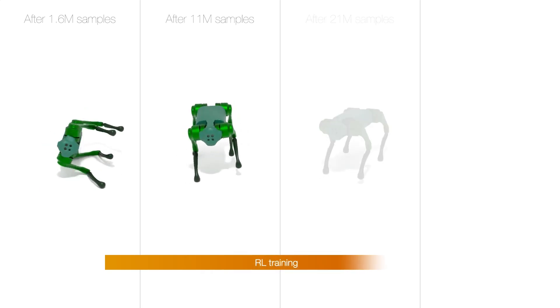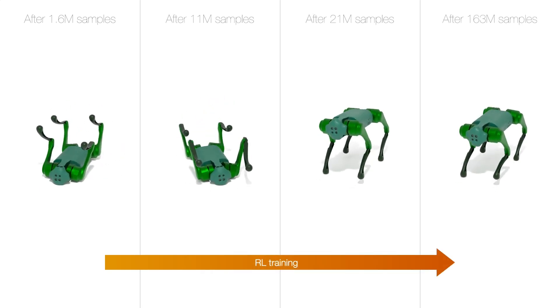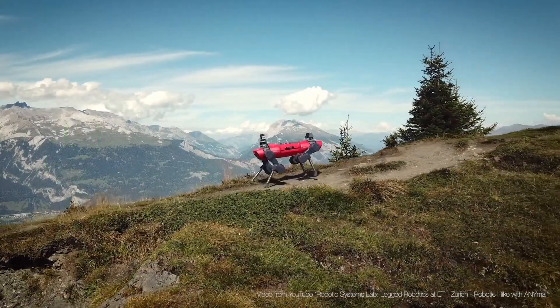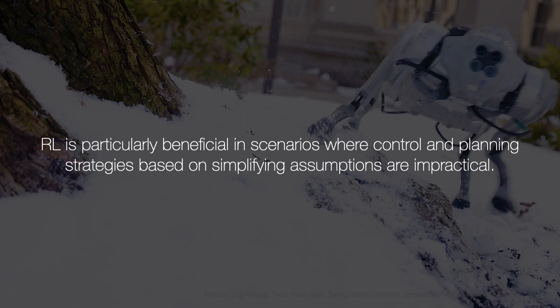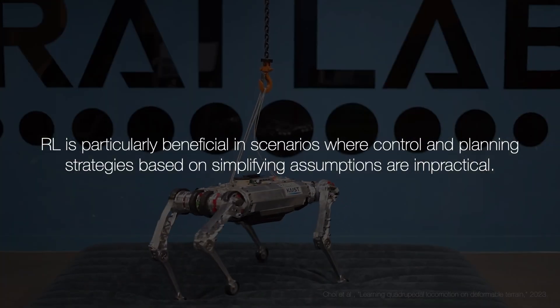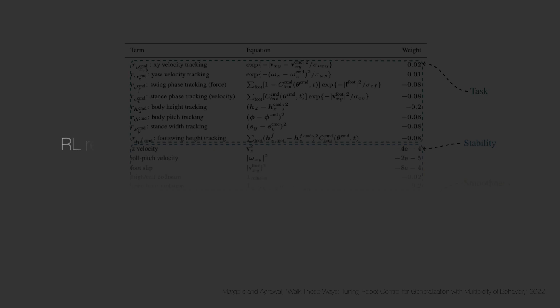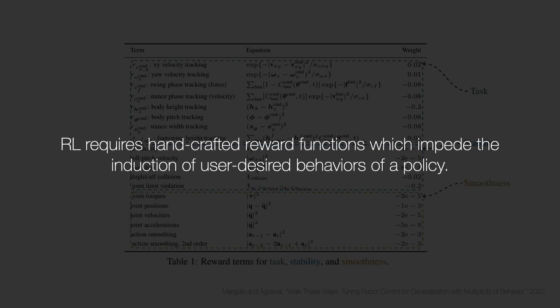On the other hand, reinforcement learning-based approaches offer an alternative by discovering optimal control policies through trial and error iterations, removing the need for manual design choices. This approach is particularly beneficial in scenarios where control and planning strategies based on simplifying assumptions are impractical. However, the standard RL setup requires hand-crafted reward functions, which impede the induction of user-designed behaviors of a policy.